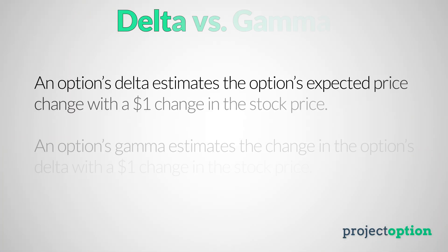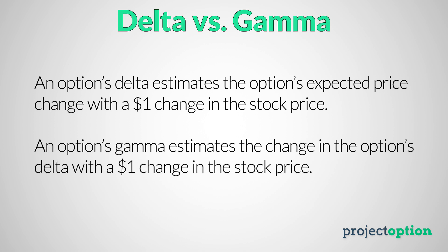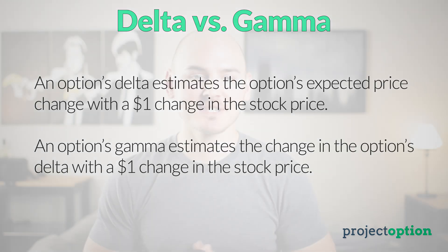While an option's delta tells us how much the option's price is expected to change based on a one dollar change in the stock price, the option Greek Gamma tells us how much the option's delta is expected to change with that same one dollar change in the stock price. I know this is confusing so let's go through a bunch of examples and by the end of this video you're going to be very comfortable with what Gamma represents.